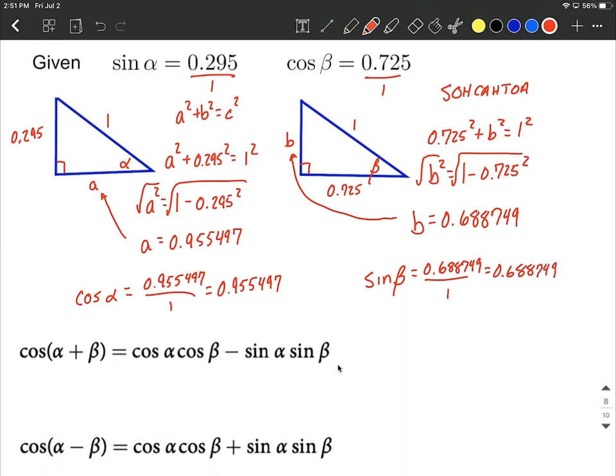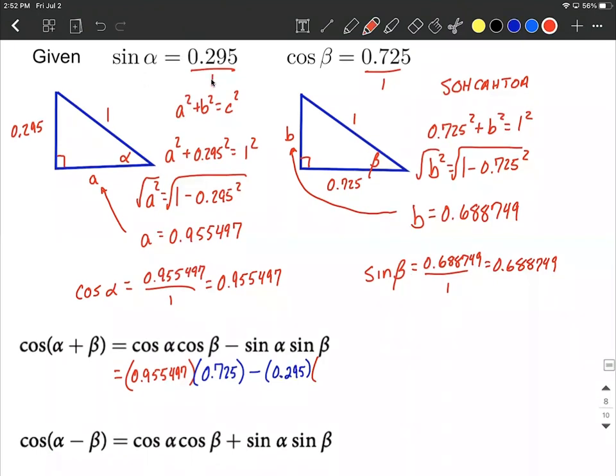Now we have all the information we need to fill into our sum and difference formulas. So down here in our sum formula, we can say cosine of alpha, which we found up here, was 0.955497 multiplied by cosine of beta. Well, cosine of beta was one of the given pieces of information from the beginning. So we can fill in 0.725 minus sine of alpha. That was one of those given pieces of information from the very beginning. So filling in that decimal that was given at the beginning multiplied by the sine of beta. Well, we did the computation over on the right-hand side to compute that was 0.688749. And after a little bit of reducing down, getting the calculator out, maybe I'll say this is approximately 0.4955.